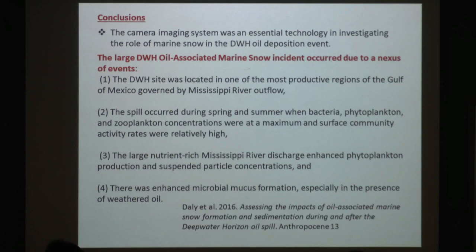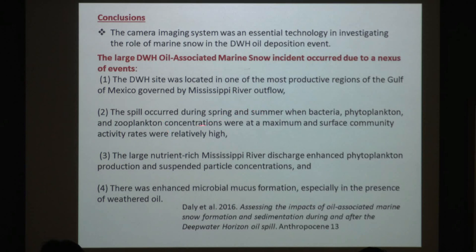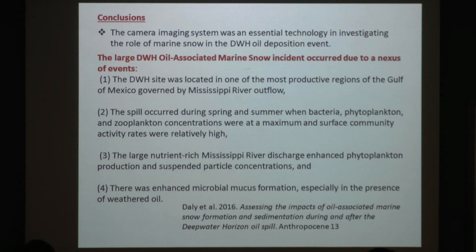We're looking at interannual variability in part to better understand how the marine snow abundance and distribution impact the sedimentation of oil to the seafloor during the Deepwater Horizon event, but also if there's another oil spill sometime in the future, how might we predict whether or not there might be another sedimentation event. We think the large oil sedimentation event during the Deepwater Horizon oil spill was due to a nexus of events: the site was located right next to the Mississippi River outflow in one of the most productive areas in the Gulf of Mexico; it occurred during spring and summer when the system was highly active; they left the diversionary channel open, releasing fresh water and nutrients enhancing phytoplankton and zooplankton growth and therefore marine snow; and the presence of oil increases microbial mucus formation, particularly with weathered oil.